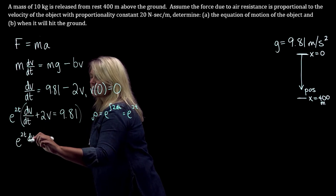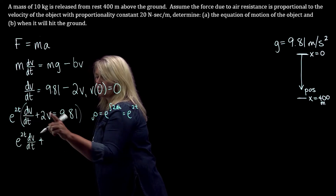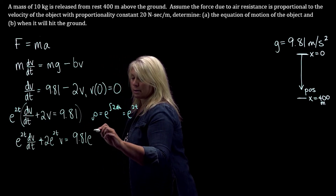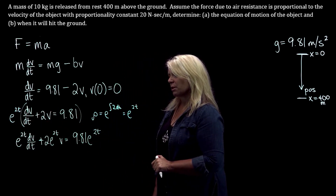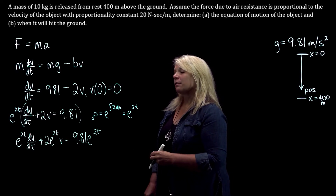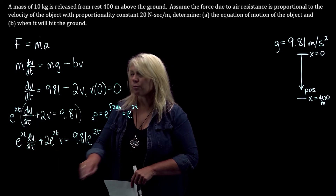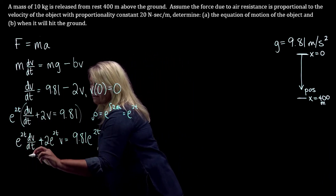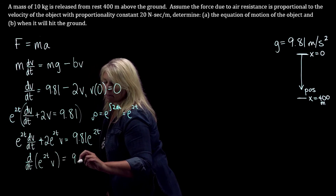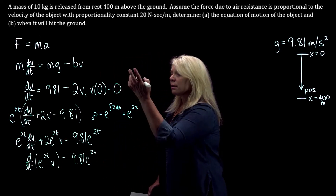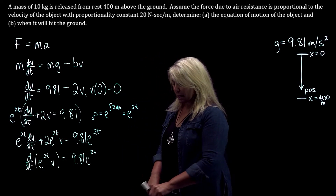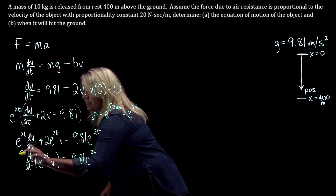So we'll have e to the 2t times dv/dt plus 2e to the 2t times v equals 9.81 e to the 2t. I'll go ahead and write this step out — I'm notoriously bad about remembering to multiply the other side of the equation by my integrating factor, so be sure you remember to do that. The whole point with this integrating factor is that you've created a product rule derivative on the left side. So the left-hand side is the derivative with respect to t of e to the 2t times v. Then the next step is to integrate both sides with respect to t.